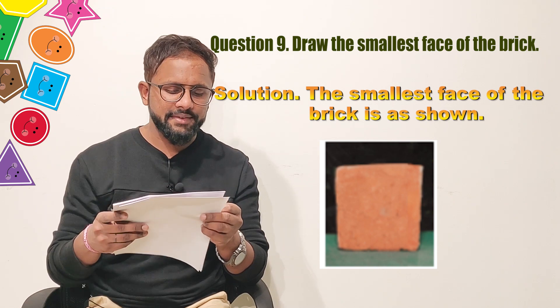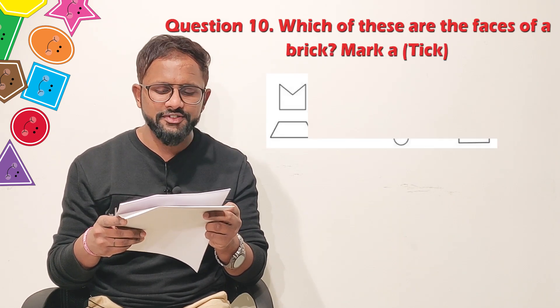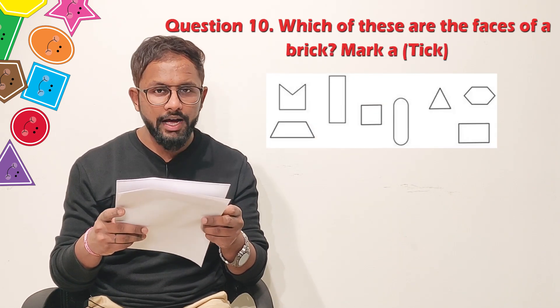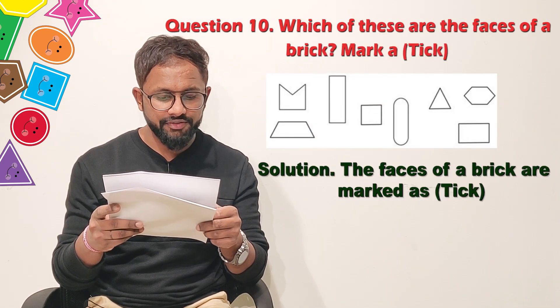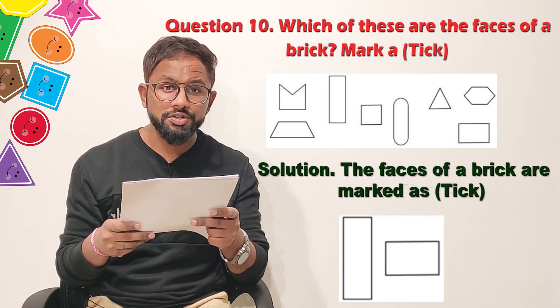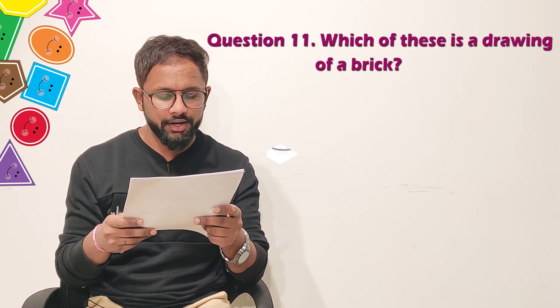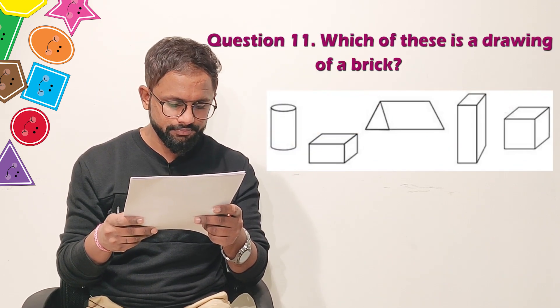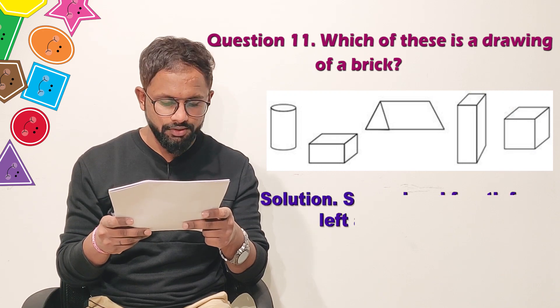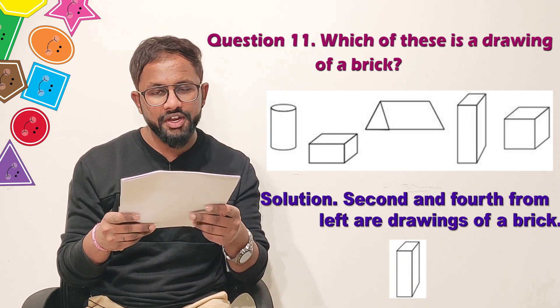Question 10: Which of these are the faces of a brick? Mark. Solution: The faces of the brick are marked on screen. Question 11: Which of these is a drawing of a brick? Solution: The second and fourth from the left are drawings of a brick.